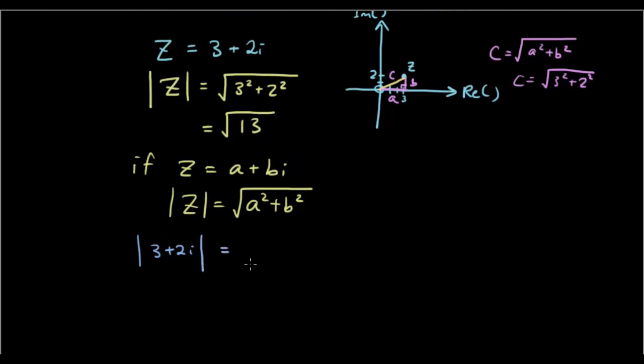To find out the modulus, you would go square root of 3 squared plus 2 squared, which is square root of 13.